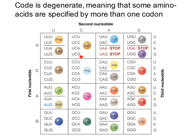Since the code is read in groups of three, adding or removing a base can disrupt the reading frame. If this used to be a codon and you add another nucleotide at the beginning, now the codon includes that nucleotide, the U and the C, and the G becomes part of the next codon. So changing the number of bases will change the way the codons are read, which changes the amino acid coded for.